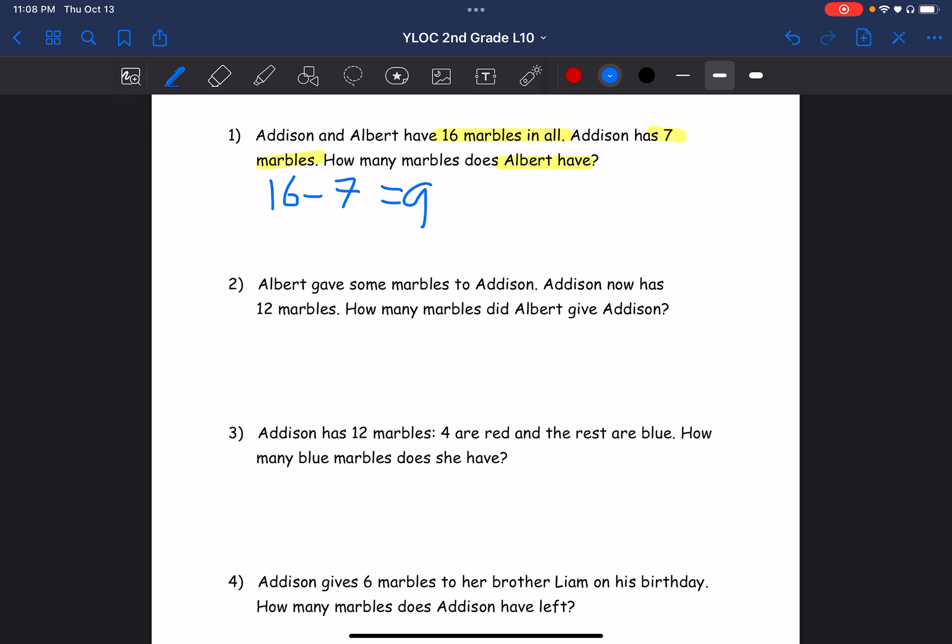Right, and then let's see number two. Albert gave some marbles to Addison. Addison now has 12 marbles. How many marbles did Albert give Addison? We can do subtraction for this. Addison now has 12 and we knew she had 7 before, so 12 minus 7 which equals 5. Albert gave Addison 5 marbles, and this is where we're going to end. Thank you.